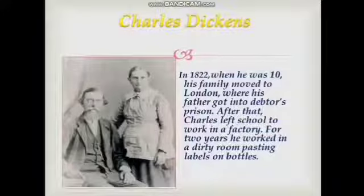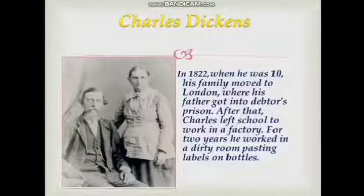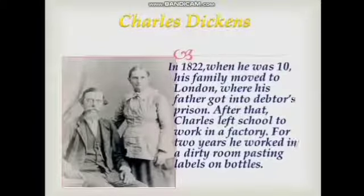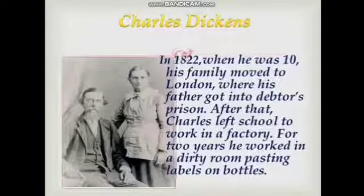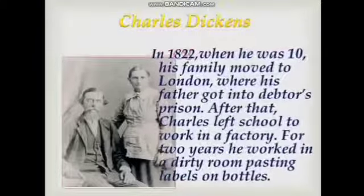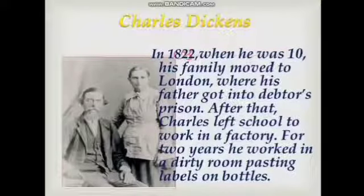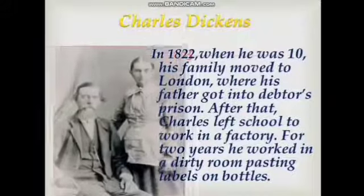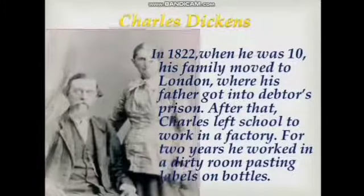In 1822, when he was 10, his family moved to London, where his father got into debtor's prison. After that, Charles left school to work in a factory. For two years, he worked in a dirty room, pasting labels on bottles.